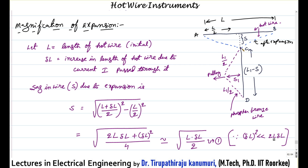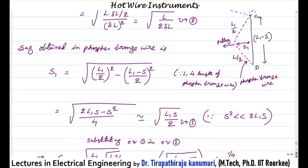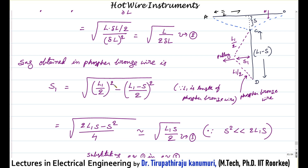The total distance from C to D is initially L1, but now it is decreased by a distance of S, so the vertical distance is L1 minus S. The actual length of the phosphor bronze wire is L1; taking in center gives L1 by 2, and the vertical distance will be (L1 minus S) divided by 2. The sag S1 is calculated as the square root of [(L1 by 2) whole squared minus (L1 minus S divided by 2) whole squared], treating it as a triangle.